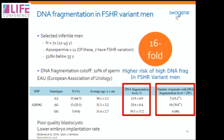Regarding DNA fragmentation: recent studies found a link between DNA fragmentation levels and the FSH receptor polymorphism. The presence of the FSH receptor polymorphism increases the risk of DNA fragmentation by 16-fold. DNA fragmentation levels are completely normal in wild-type men, but significantly increased in men carrying one or two copies of the variant. Notably, 80 percent of men with FSH receptor variation had high levels of DNA fragmentation, compared to only 15 percent of wild-type men.